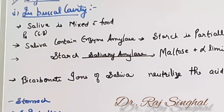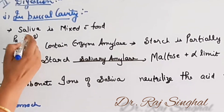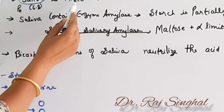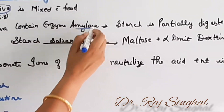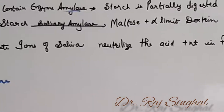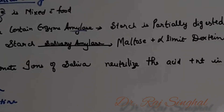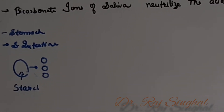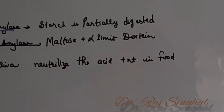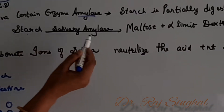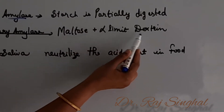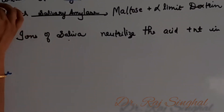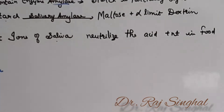In the buccal cavity, salivary glands secrete saliva which has a pH of 6.8. This saliva is mixed with food. Saliva contains an enzyme called salivary amylase, which acts on starch molecules. Since the food remains in the buccal cavity for a short period of time, starch is only partially digested. Salivary amylase breaks starch down into maltose and alpha-limit dextrin. The bicarbonate ions present in saliva neutralize the acid present in the food.